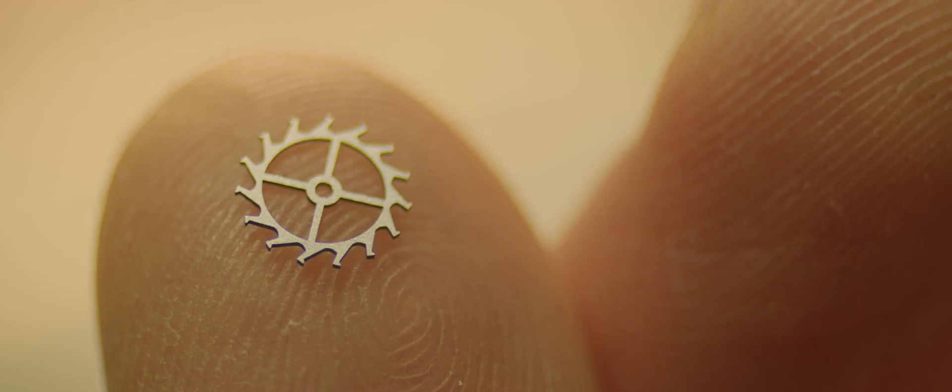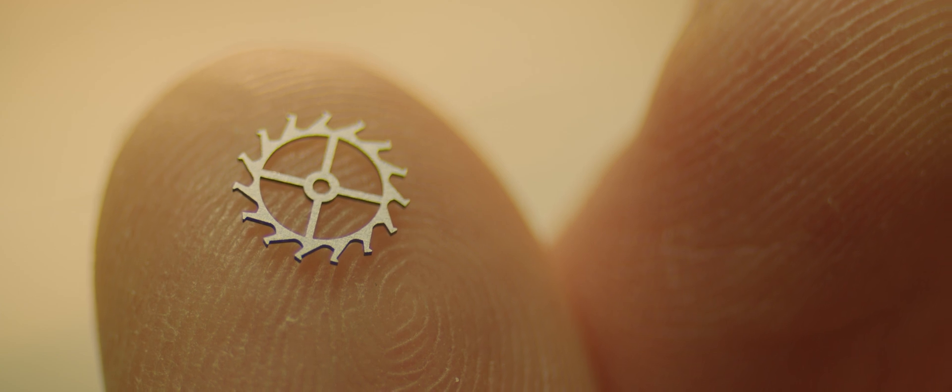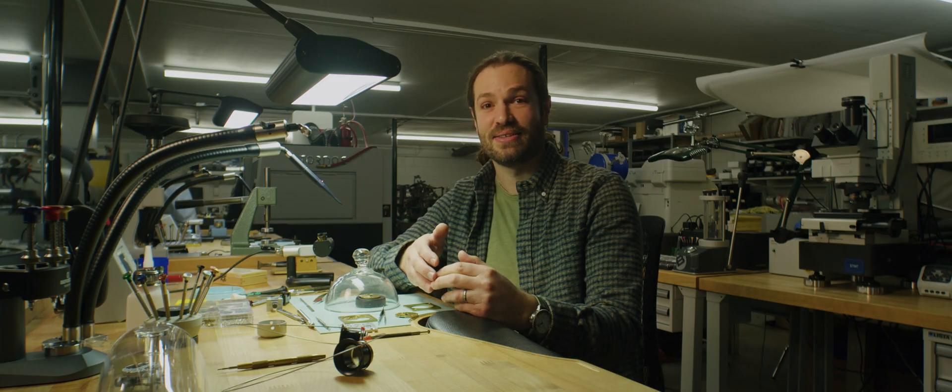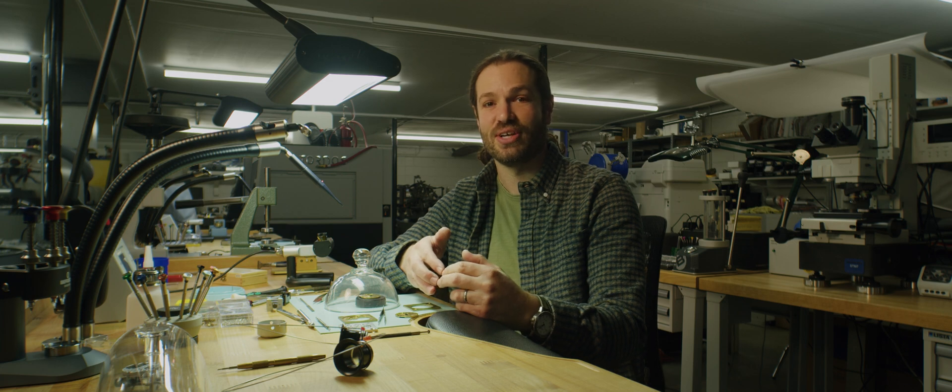And sometimes we even have to make our own tool for certain types of burrs or certain sizes of holes, different challenges we might find with new parts. And that tool making aspect is one of the most important parts in watchmaking. Knowing when an existing tool is not right for the job and being able to make the right tool for that job.